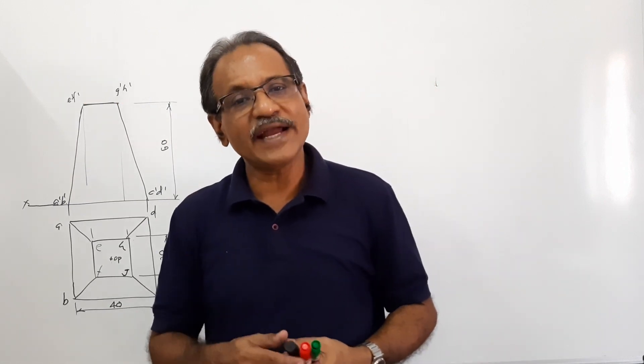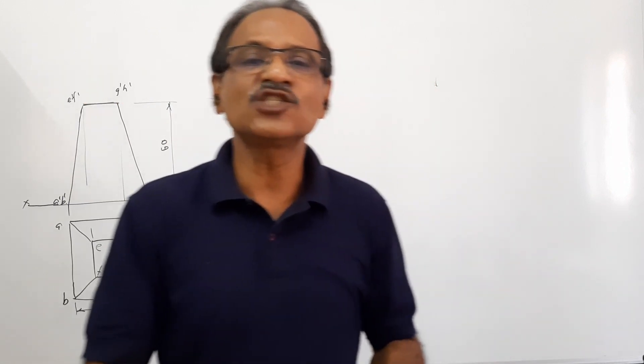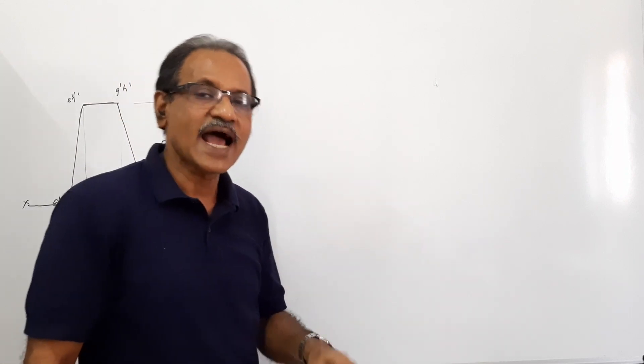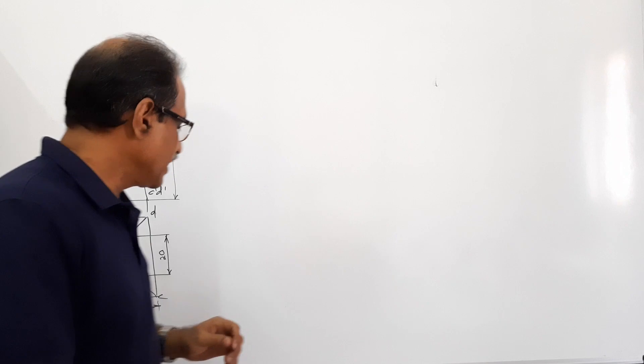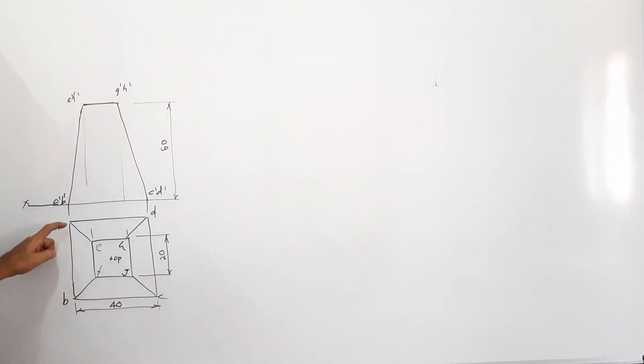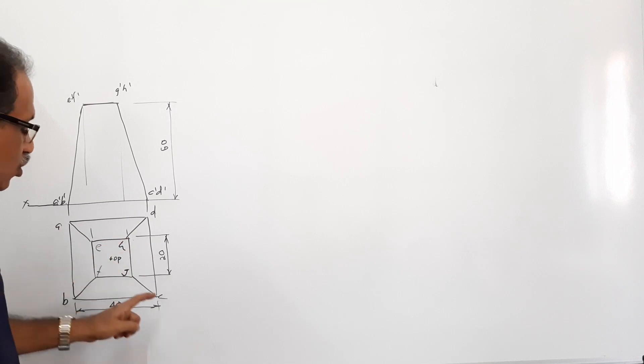You are asked to find out the shortest distance between a corner of base and the opposite corner of top. Where is the corner of base? A is the corner of base. What is the opposite corner of top? G is the opposite corner of top. So you are asked to find out the shortest distance between A and G, or B and H, or C and E, or D and F.